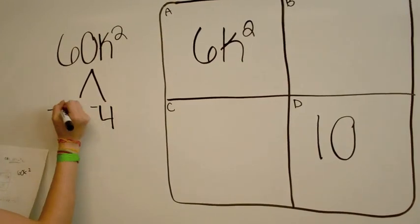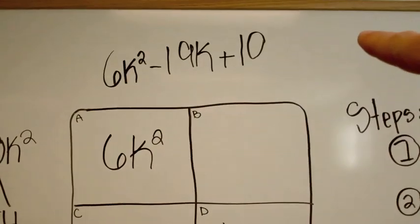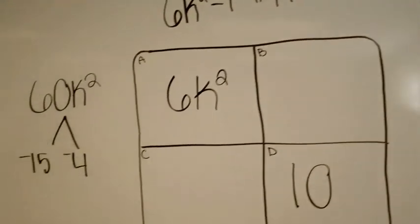The reason, for people who are unclear, it should equal 19 is because it's negative 19. We're just factoring here.